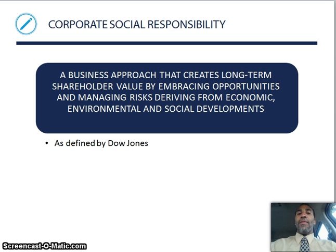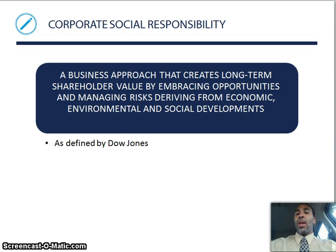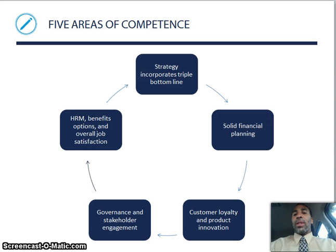On the environmental side, a company I used to work for — if I go down the 55 freeway — has solar panels on top of the building, showing real commitment to corporate social responsibility. Social developments are defined by Dow Jones. The five areas of competence are: strategy incorporating the triple bottom line, solid financial planning, customer loyalty and product innovation, governance and stakeholder engagement, and human resource management including benefit options and overall job satisfaction.